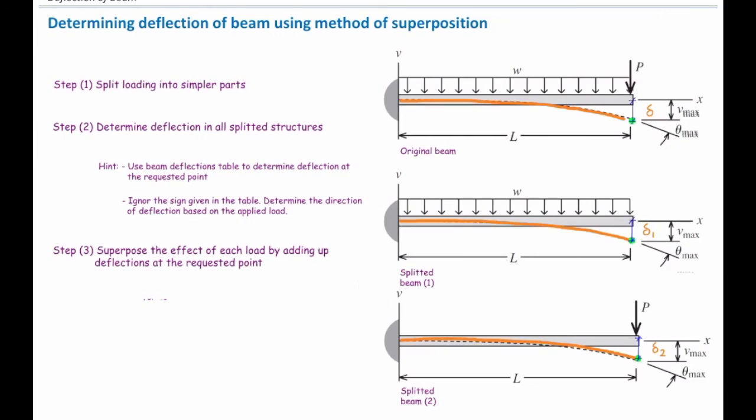In step number three, we superpose the effect of each load together to come up with the overall deflection. So that means simply add the deflections together. And make sure that you are working with the correct sign. I mean, for instance, in this figure, they are both pushing the beam downward, so they should be added together. If one goes upward, one goes downward, we need to subtract them from each other. Just make sure that you are working with the correct direction and correct sign. I am going to solve different problems.